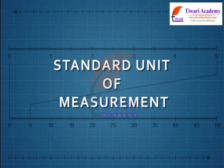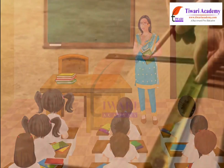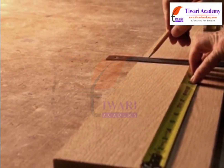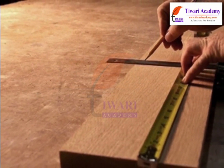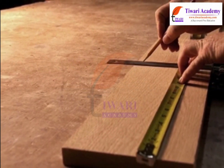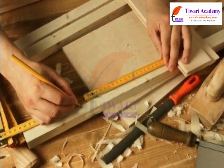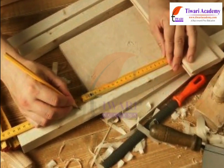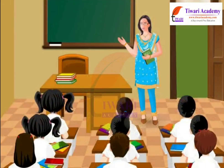Standard unit of measurement. Let us study about standard unit of measurement. Measurement means the comparison of an unknown quantity with some known quantity. This known fixed quantity is called a unit. When we say the measurement of a length is 10 meters, we actually mean it is 10 times the definite length called meter. In this lesson, we will discuss about standard unit of measurement in detail.